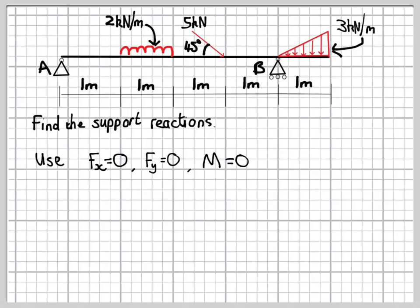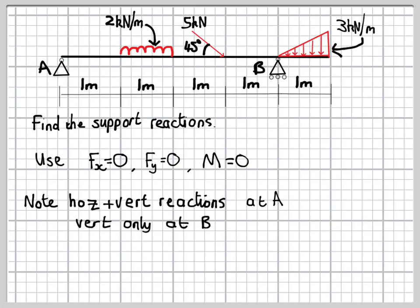The first step in this sort of problem is to draw a free-body diagram, and that captures all the loads acting on the structure, including those due to the support reactions. You might note here that there are two supports, A at the left hand side, which is a hinge.